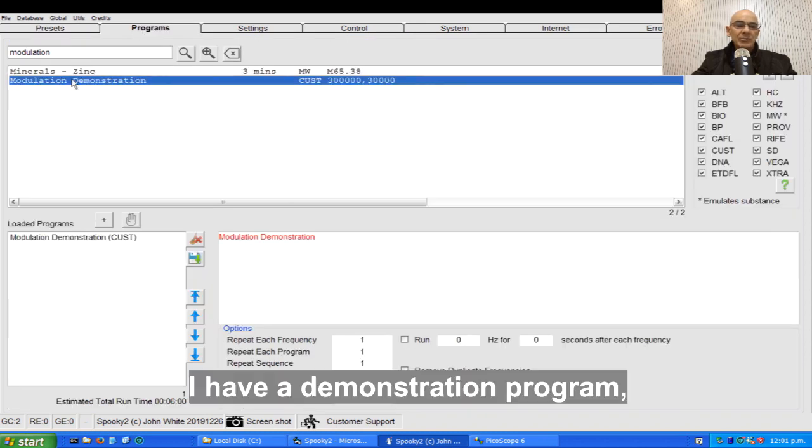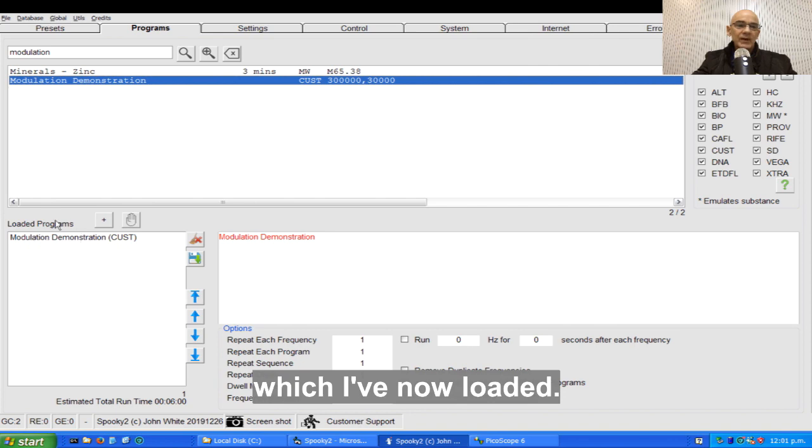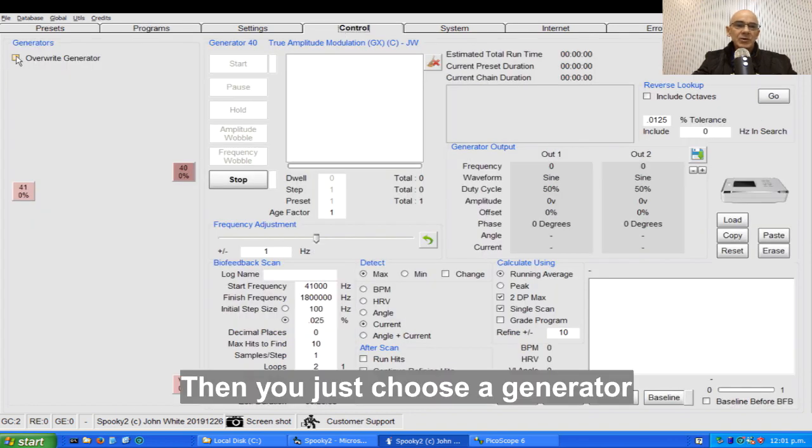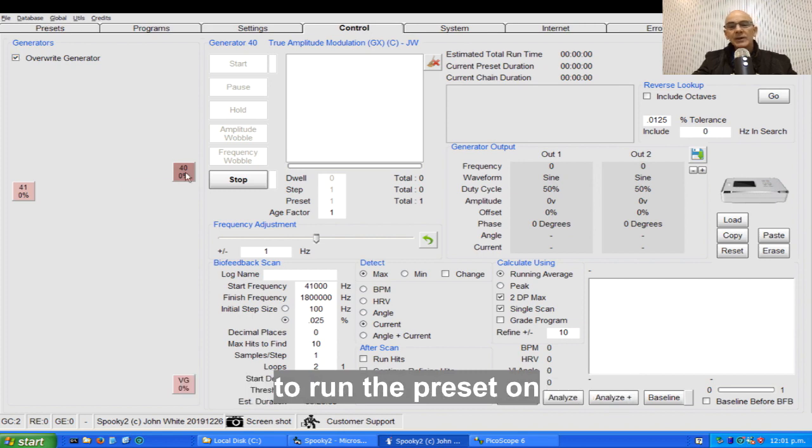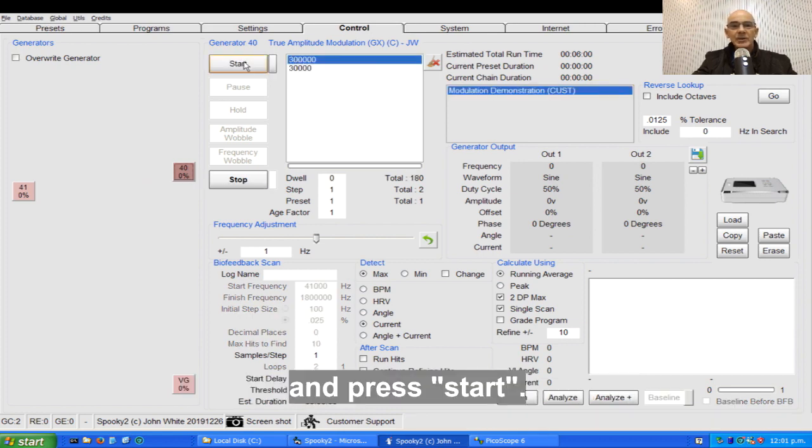I have a demonstration program which I've now loaded. Then you just choose a Generator to run the preset on and press Go.